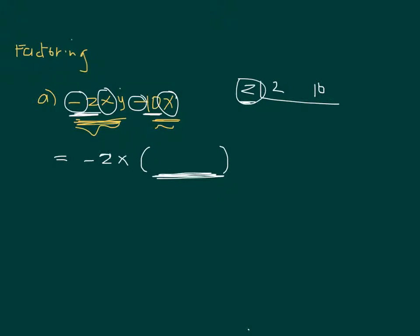After factoring out minus 2x, you can simply look at it this way: if I take away minus 2x, what's left in the first term? Now if I have negative 10 and factor out 2, meaning you're dividing it by 2, what will be the number? 5. So if I factor out 2 I have 5, and if I factor out negative 2 I have positive 5. x is a common factor so x will no longer be there, leaving y plus 5.